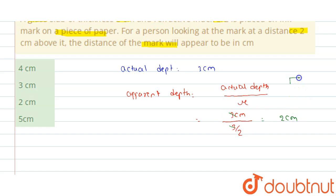Now students, let us consider this is our glass slab. Now this is the ink. This is the ink and this is the thickness of the glass slab which is given as 3 cm.